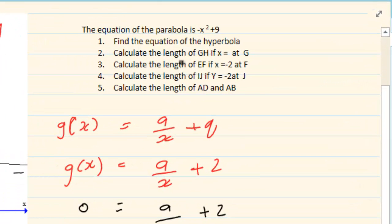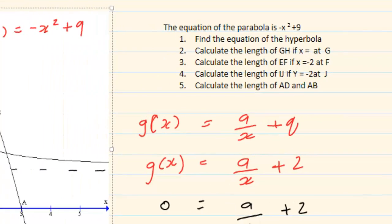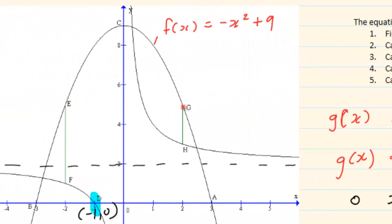Let's go to the next question: calculate the length of GH. Now, g is on the parabola and h is on the hyperbola. We know they are telling us that x is equal to 2 — you can see on the graph that x is equal to 2.